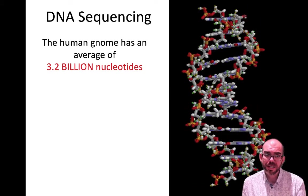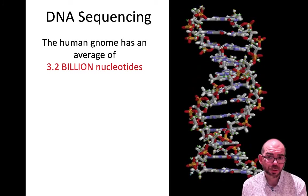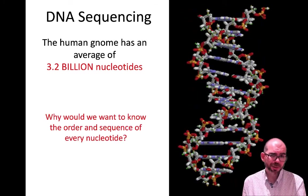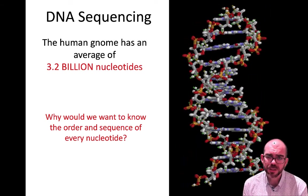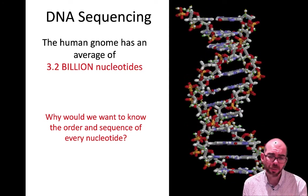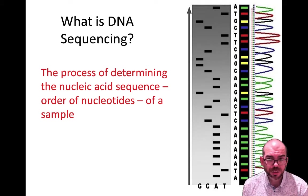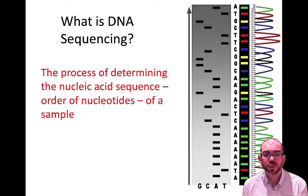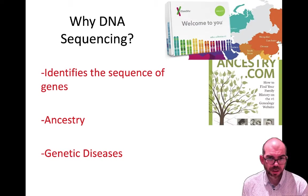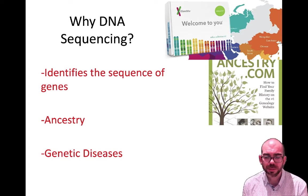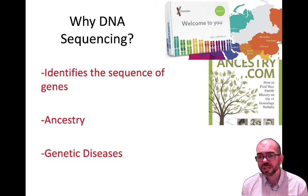Let's now talk about DNA sequencing. The average human genome has about 3.2 billion nucleotides. Knowing the exact sequence lets scientists determine if you carry a gene for a certain disease or learn your genetic history. DNA sequencing is the process of determining the nucleotide sequence of a DNA sample from beginning to end. You may have seen commercials for kits like 23andMe and Ancestry.com — but those are not full gene sequencing programs; they only sequence a very small portion of your genome.